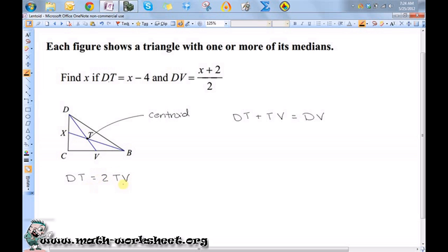Well, if I wanted to write this in terms of DT, because I want to substitute an expression for DT and for TV, I know that one-half of DT is equal to TV. So what I can do is I can say DT plus one-half of DT is equal to DV. So now I have DT and DV only, and I have expressions for those, so I can go ahead and plug those in.